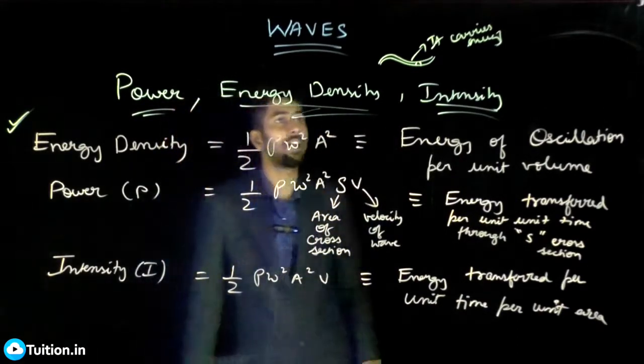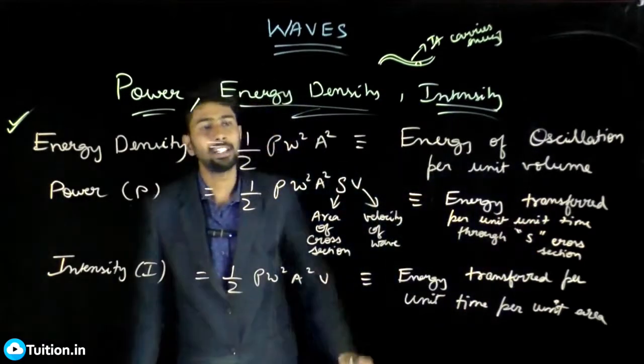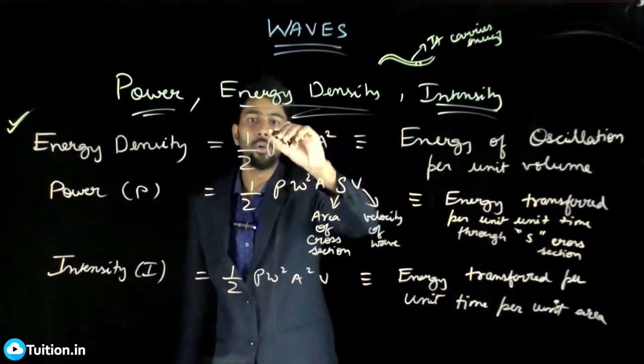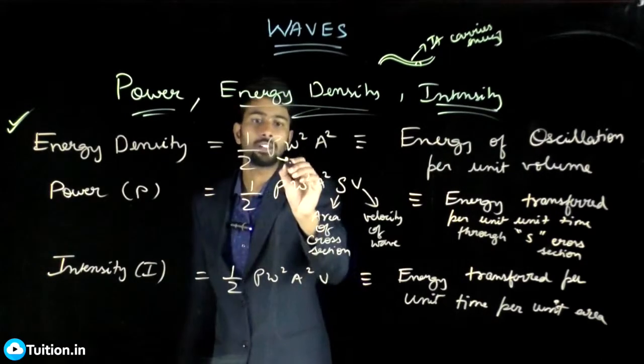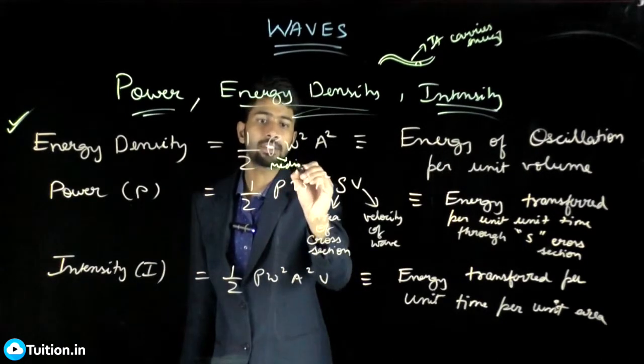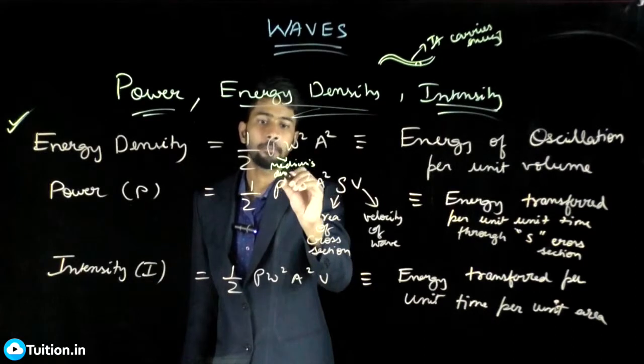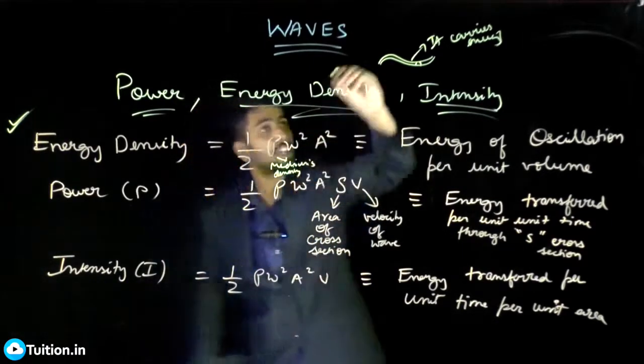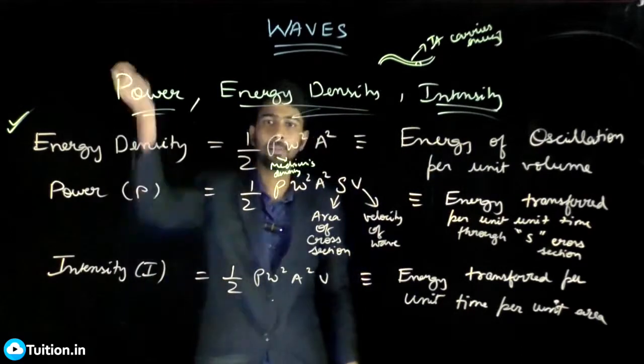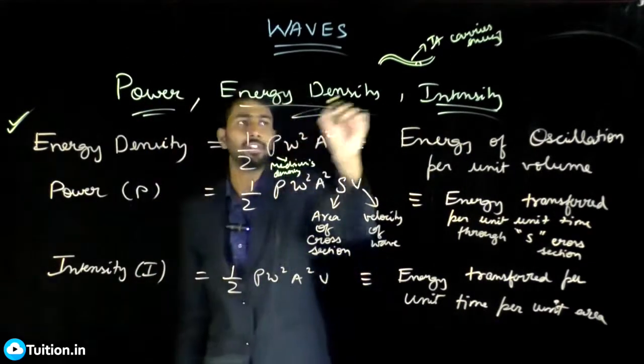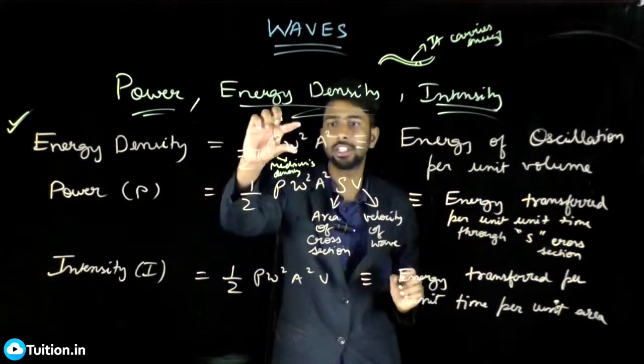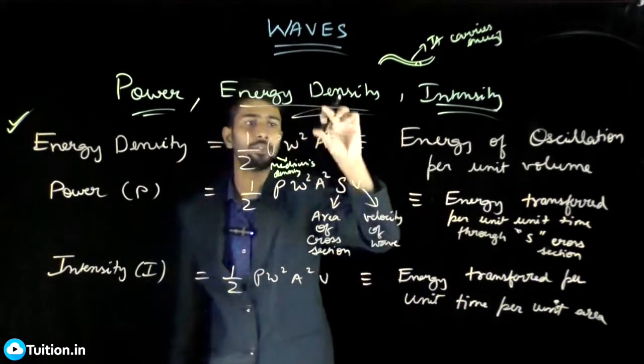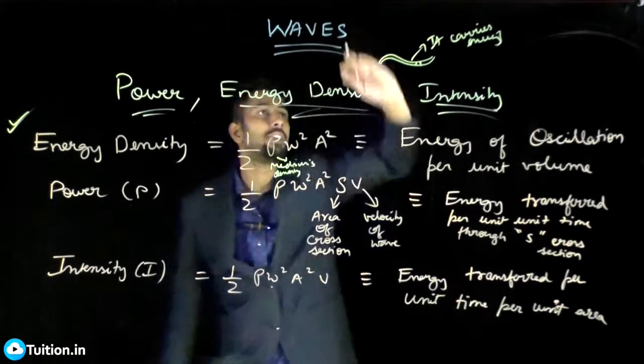This wave is traveling in some medium. Let the medium's density be rho. This rho is medium's density. Omega is the angular frequency of the wave. It depends on the oscillator. If the frequency of wave is f, omega is nothing but 2 pi f. This is angular frequency of the wave, and this is the amplitude of the wave.